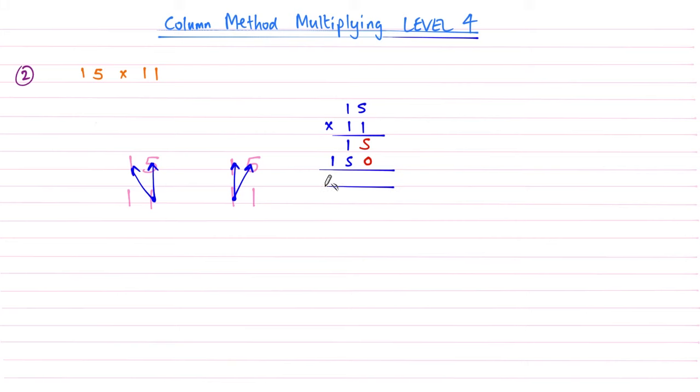And then, as per example number 1, we're going to add these two numbers up now. So 5 of nothing is 5. 1 add 5 is 6. Then 1 on its own is just 1. So the answer to that one is 165.